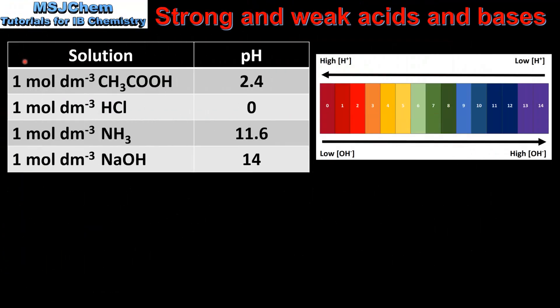Next we look at pH. In this table we have 1 mol per decimetre cubed solutions of strong and weak acids and bases. A 1 mol per decimetre cubed solution of ethanoic acid will have a pH of approximately 2.4. For hydrochloric acid the pH will be 0. For ammonia the pH will be approximately 11.6. And for sodium hydroxide, 14.